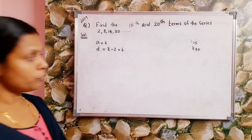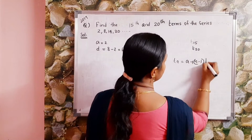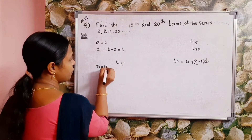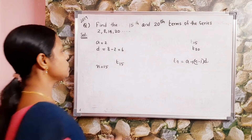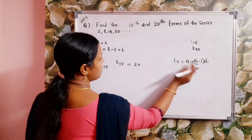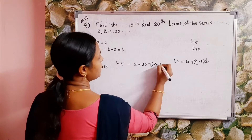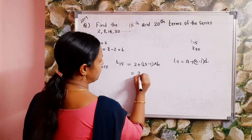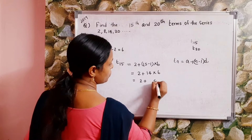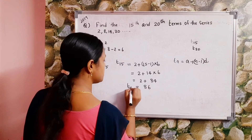First we find t15. We know that tn equals a plus n minus 1 into d. So t15 equals 2 plus 15 minus 1 into 6, that is 2 plus 14 into 6. That equals 2 plus 84, which gives us 86. Therefore t15 is equal to 86.